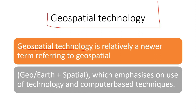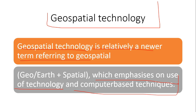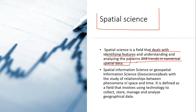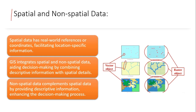Geospatial technology is a relatively newer term — 'geo' plus 'spatial' — emphasizing the use of technology and computer-based techniques to gather data about the earth's surface. Spatial science is a field that deals with identifying features and understanding and analyzing patterns and trends in numerical spatial data, representing the relationship between space and time. It involves using technology to collect, store, manage, and analyze geographical data and is also known as geospatial information science or geoscience.